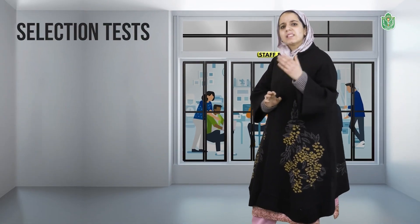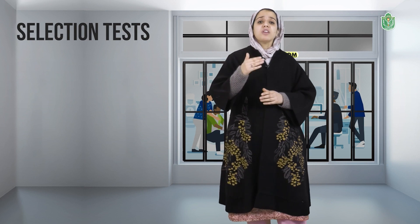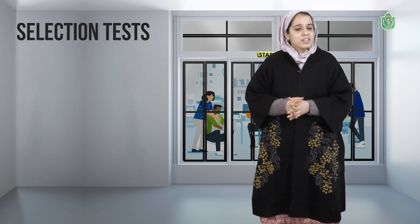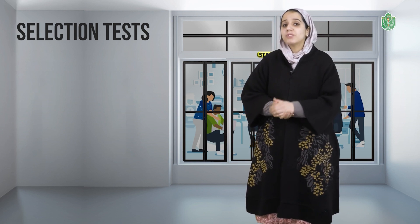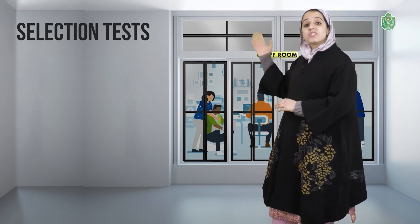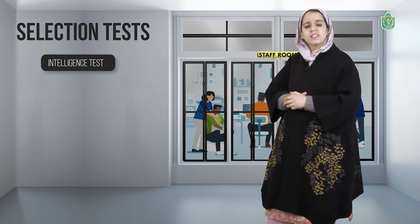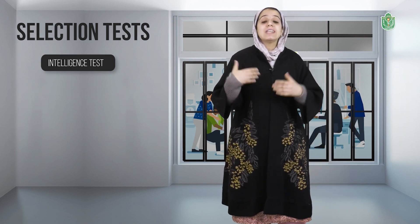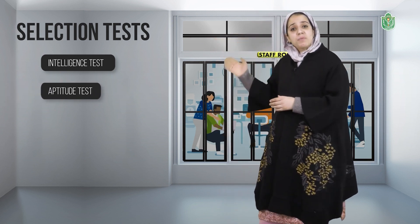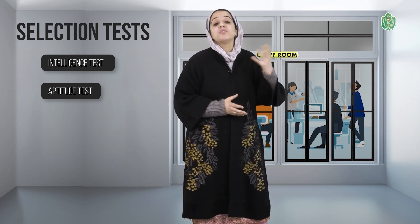The next step is selection tests. These selection tests aim at measuring certain characteristics of an individual. The first test is the intelligence test, which aims at measuring the intelligence level of an employee. The next is the aptitude test, which aims at measuring the capability and the potential of an individual to learn new skills.